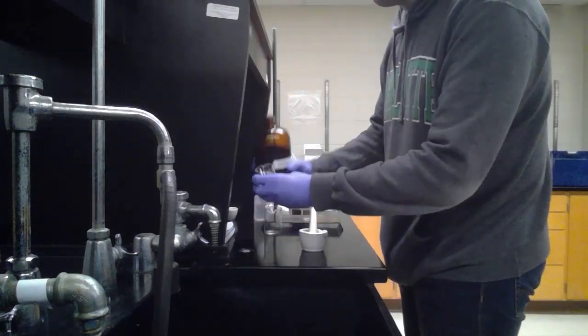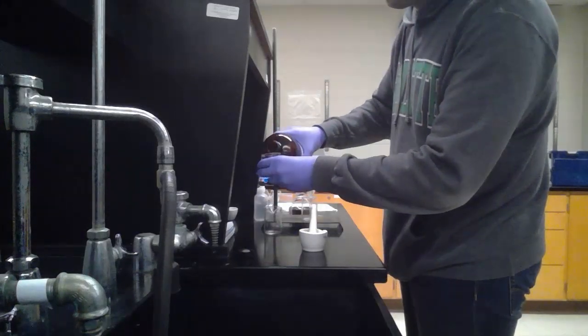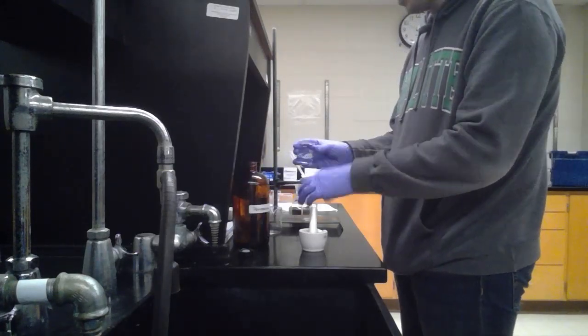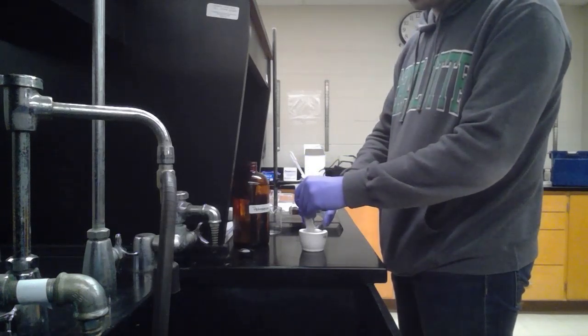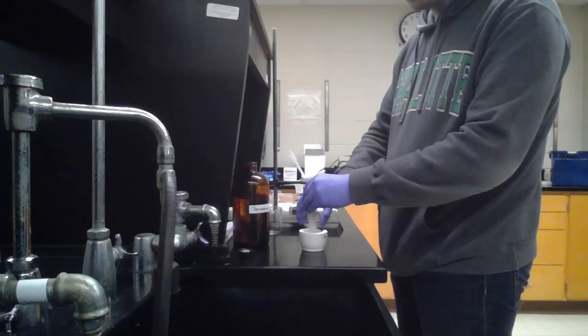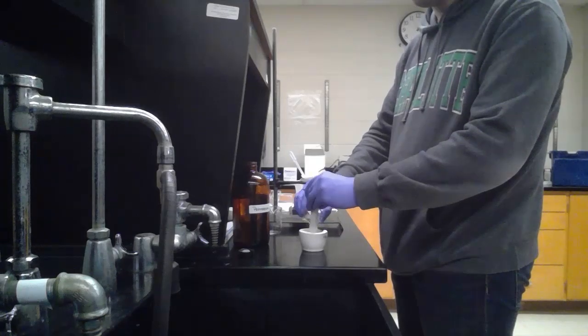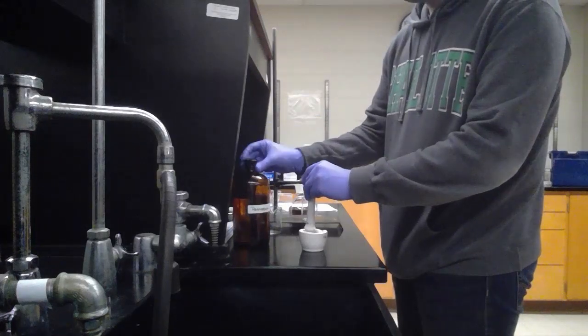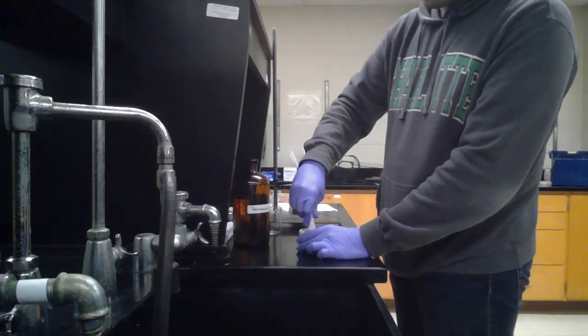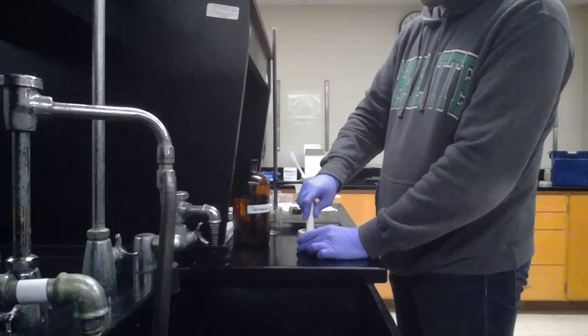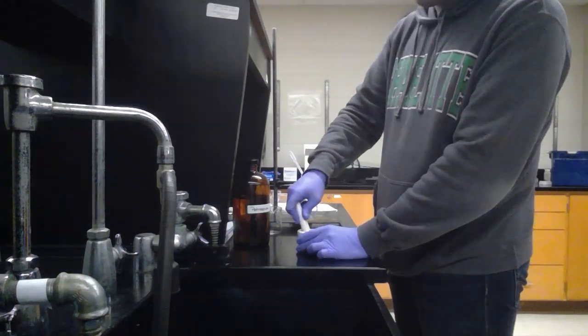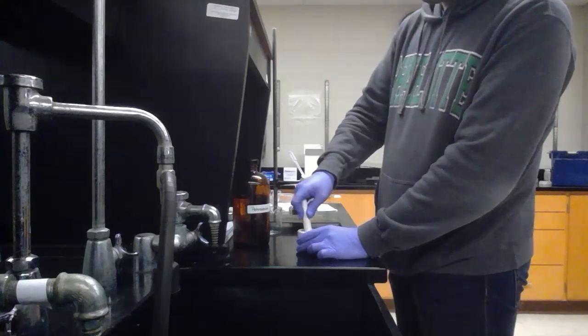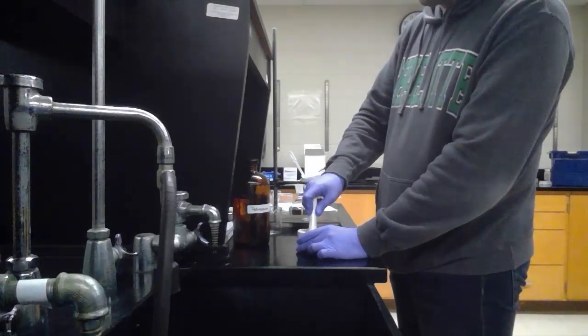I'm just going to pour 20 milliliters in this little beaker here. Then we'll take that and pour it over. I'm just going to rinse off the pestle with it also because I was grinding stuff up, and you want to make sure that you get as much as you can. After you do that, you're going to carefully crush these up in here so that you can get as much of the fat from the chips as you can into the solvent.